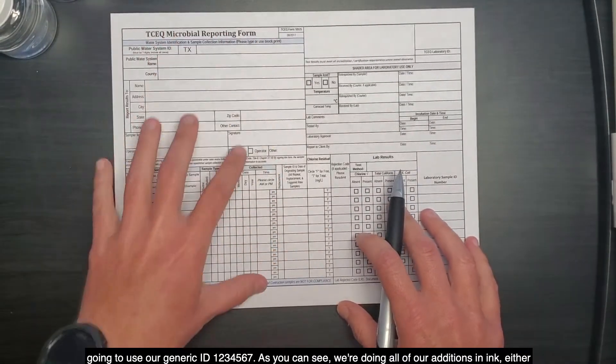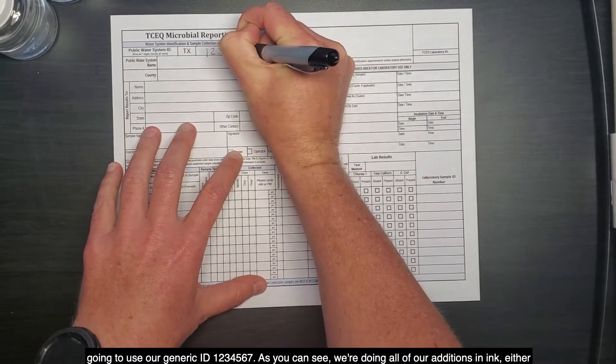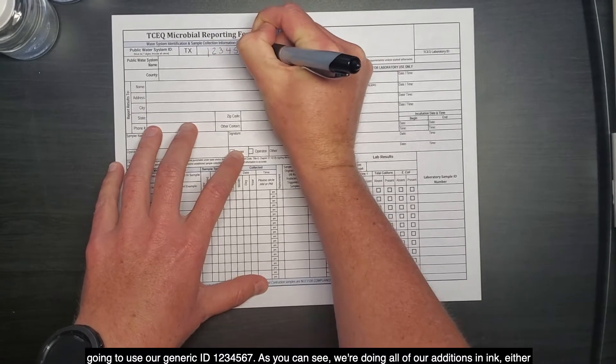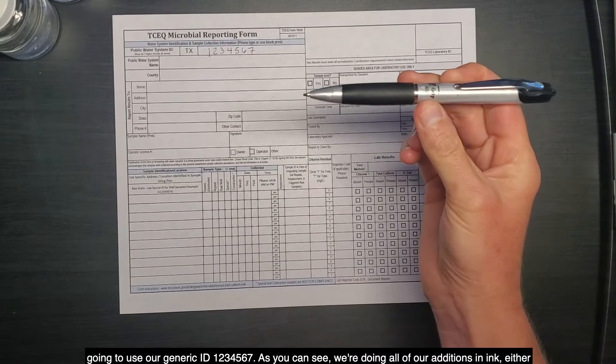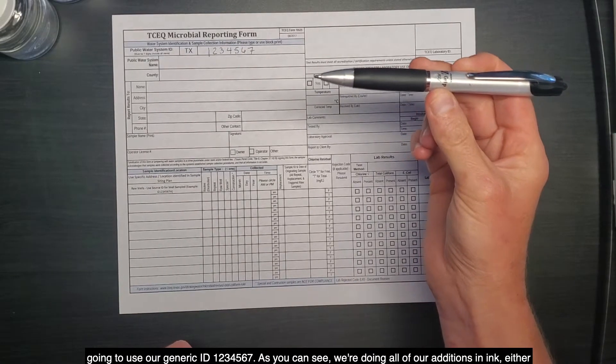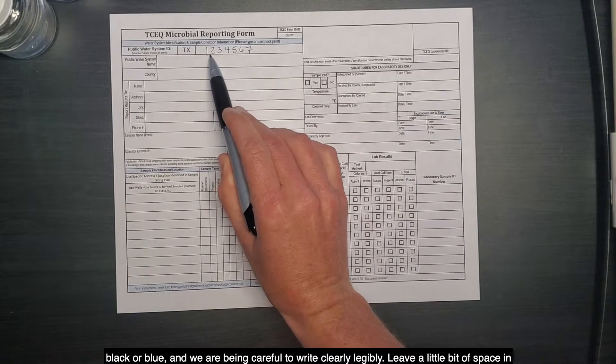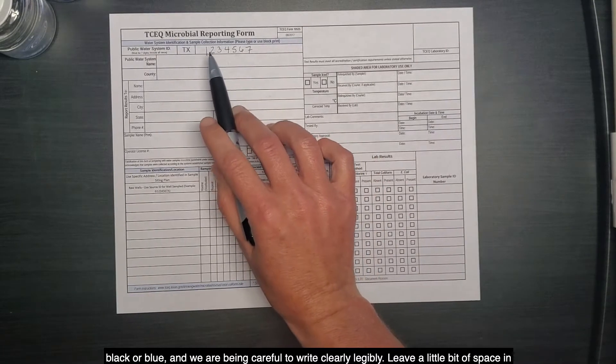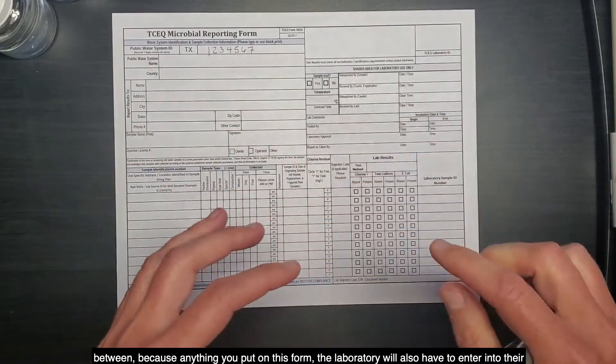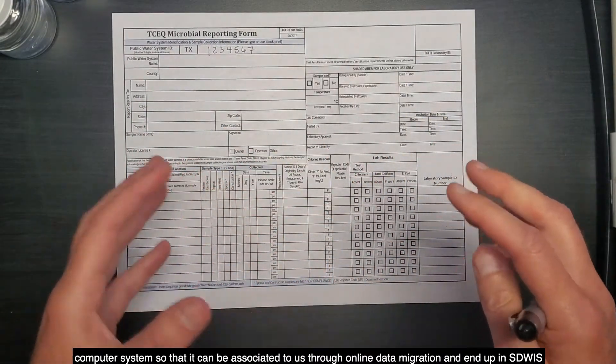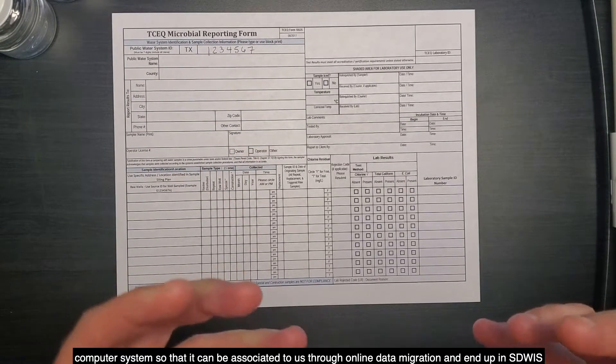For this example, we're going to use our generic ID: one, two, three, four, five, six, seven. As you can see, we're doing all of our additions in ink, either black or blue, and we are being careful to write clearly, legibly, leave a little bit of space in between, because anything you put on this form, the laboratory will also have to enter into their computer system so that it can be associated to us through online data migration and end up in SIDWIS to give you credit.